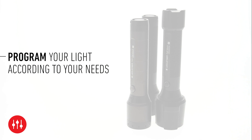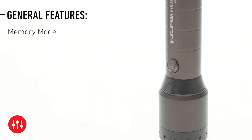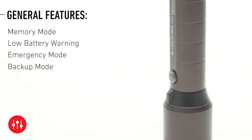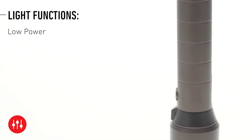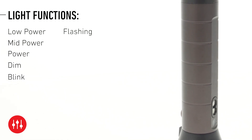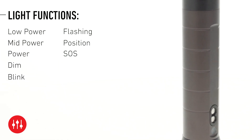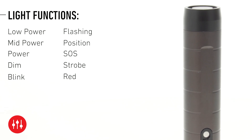With LED Lenser's smart light technology, you can personalize your light according to your needs. You can activate and deactivate general features, but you can also select specific light functions and set them exactly how you need them. This way you can adjust your light to your individual needs. This video illustrates how to program each function.